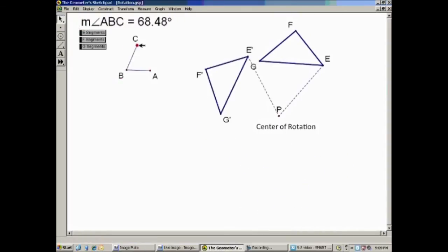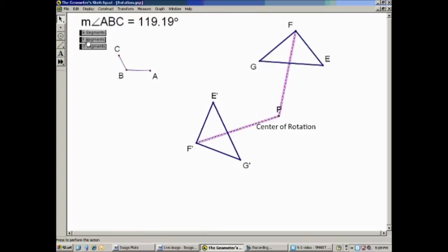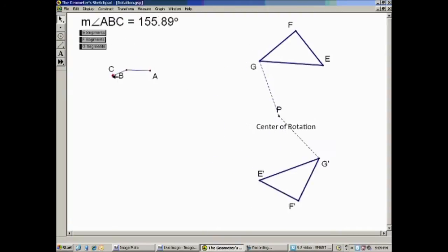Measure it around. Now the interesting thing is that the angle from E, the angle EPE prime is the same angle as this 119.19 degrees, which is also the same angle as F angle FPF prime. It's also that same angle. And the same thing is true with G. Angle GPG prime is also 119.19 degrees. That can change.